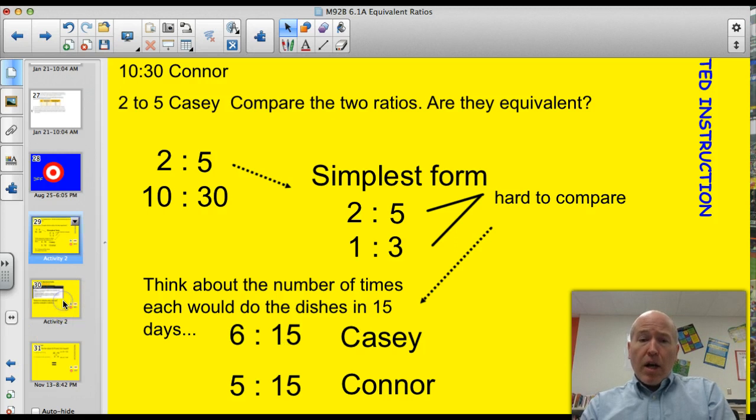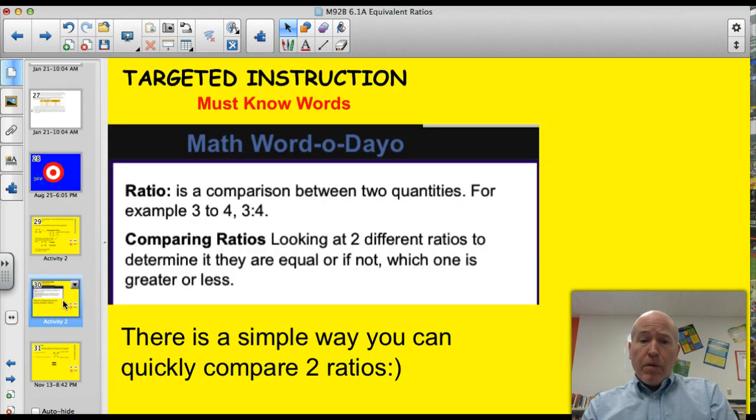Let's take a look at a couple of vocabulary words. First of all, a ratio, a comparison between two quantities. And then comparing ratios. That's looking at those two different ratios to see if they're equal or not. There's a simple way we can do this. Let's take a look at it.